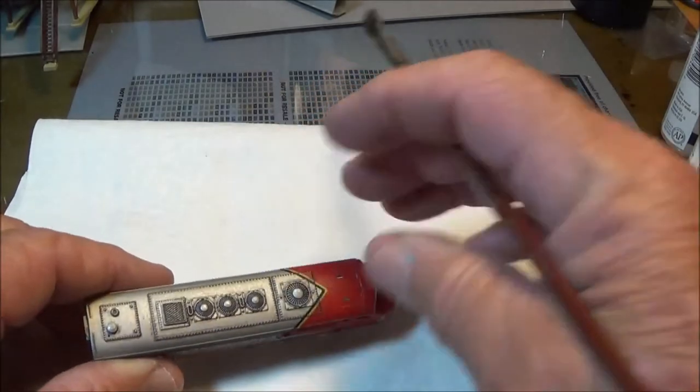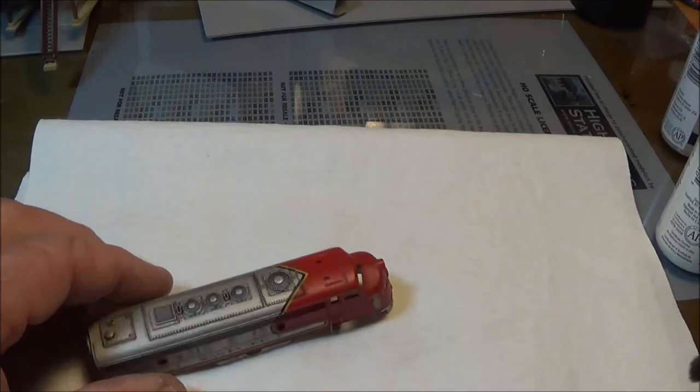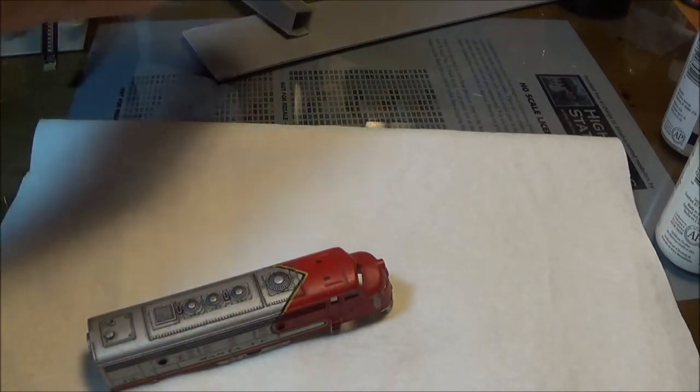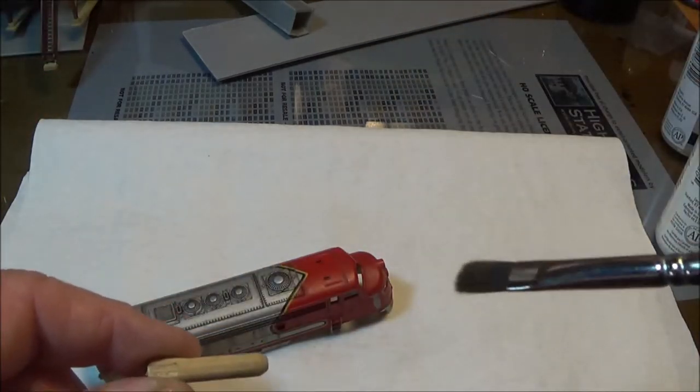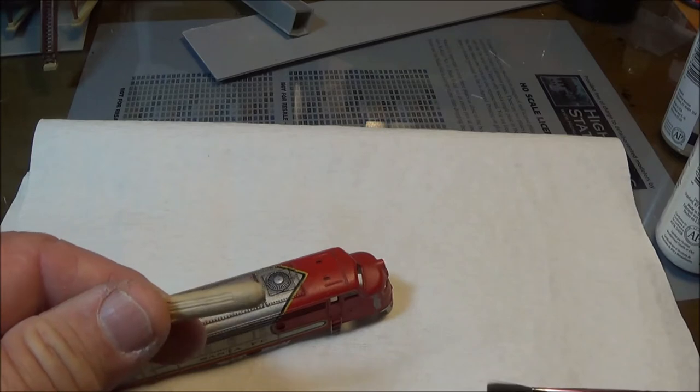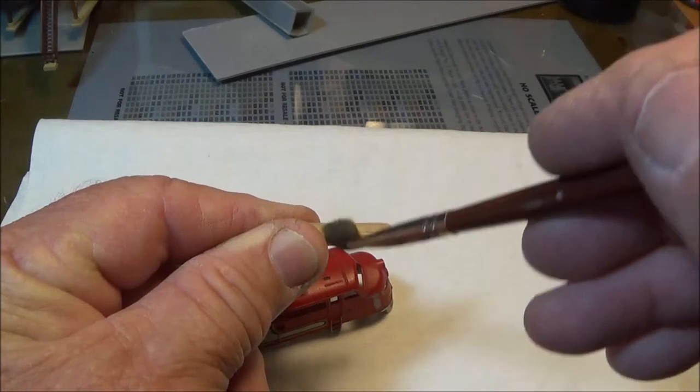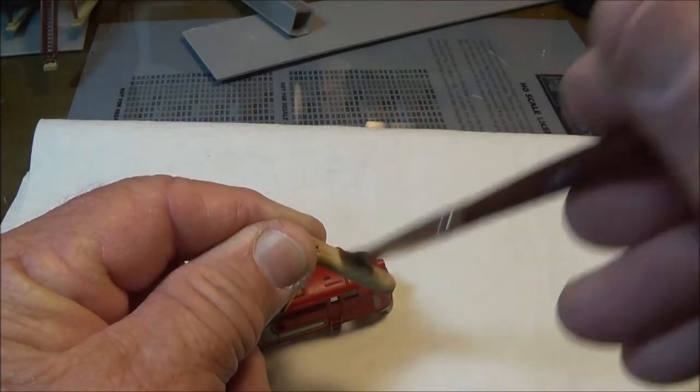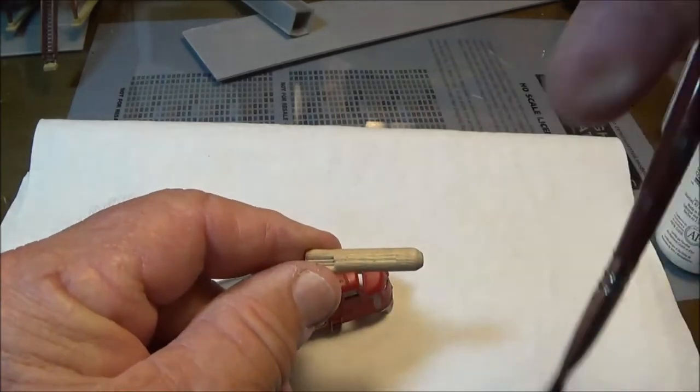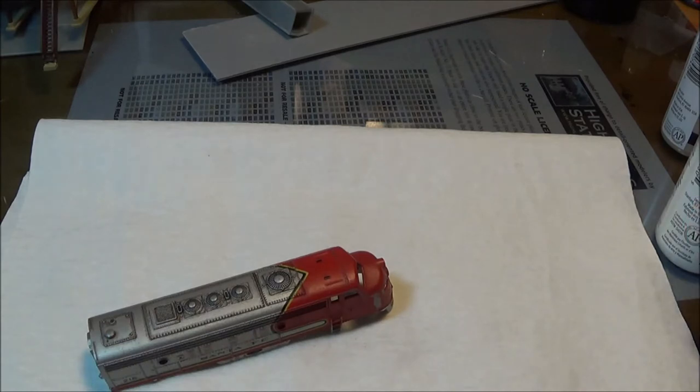At that point what we're going to do is have a sample piece of plastic or something around. Hang on just a second. A piece of plastic or something to dry brush on. I just happen to have this junky wood dowel here. You could run it on your test piece and see how much acrylic you're getting off. You want to just barely have anything coming off when you're doing this.